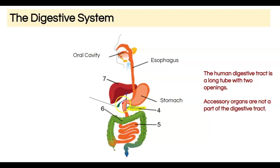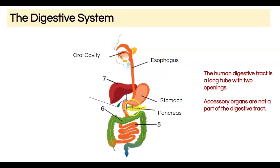From the stomach, food moves into this orange structure called the small intestine. Before we get there, we have an accessory organ called the pancreas, which has a role of controlling blood sugar among other things and is involved in digestion — but it's not connected to the digestive tract itself.